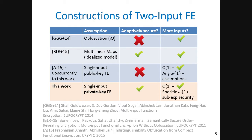The main result of our work is a construction of a multi-input functional encryption scheme from any single-input secret-key FE scheme. It can be extended to any constant number of inputs, and even a slightly super-constant number assuming sub-exponential security of the initial scheme. In terms of assumptions, ours is the weakest, and in terms of security, it is the strongest possible — though we are limited to a constant number of inputs.